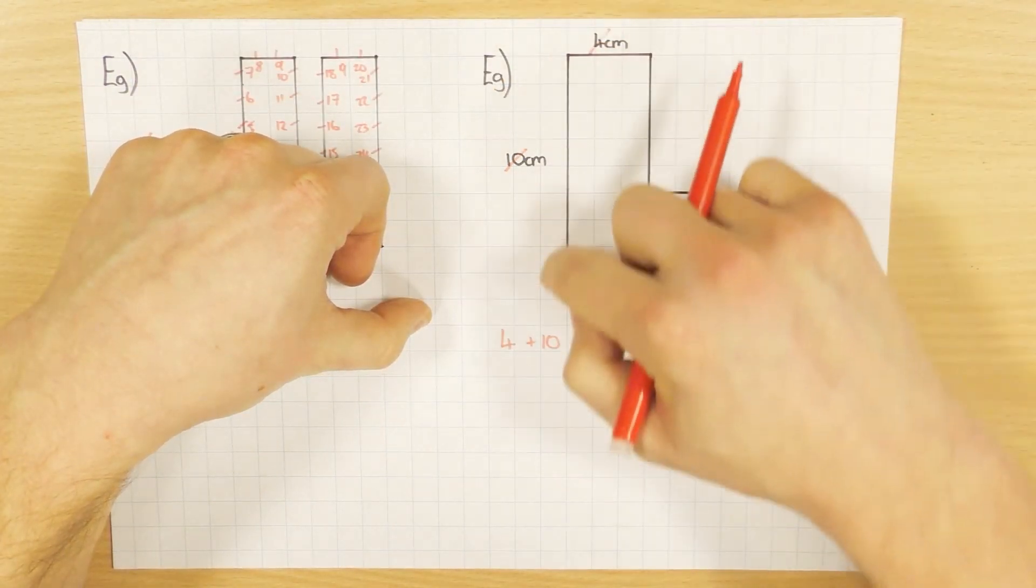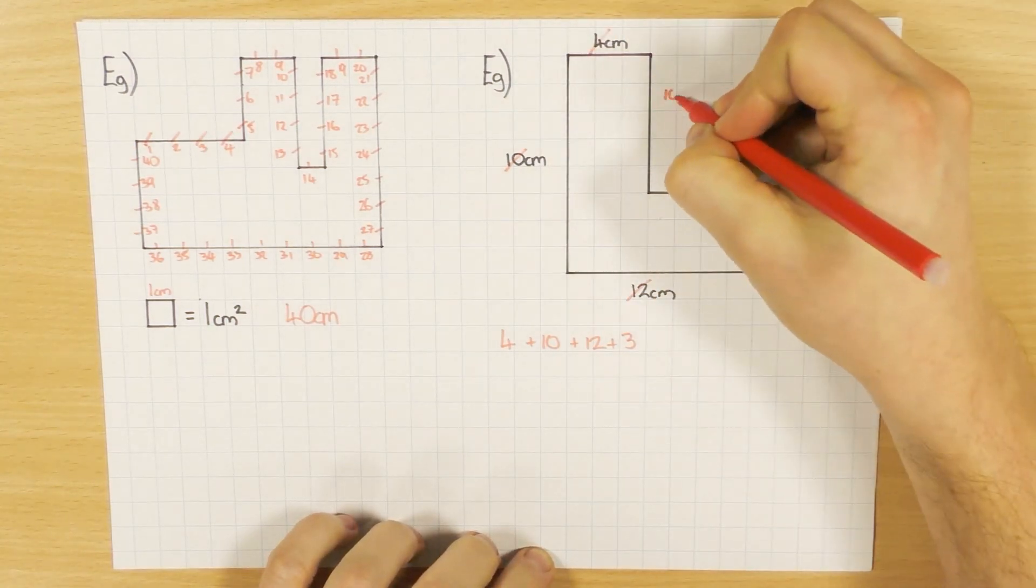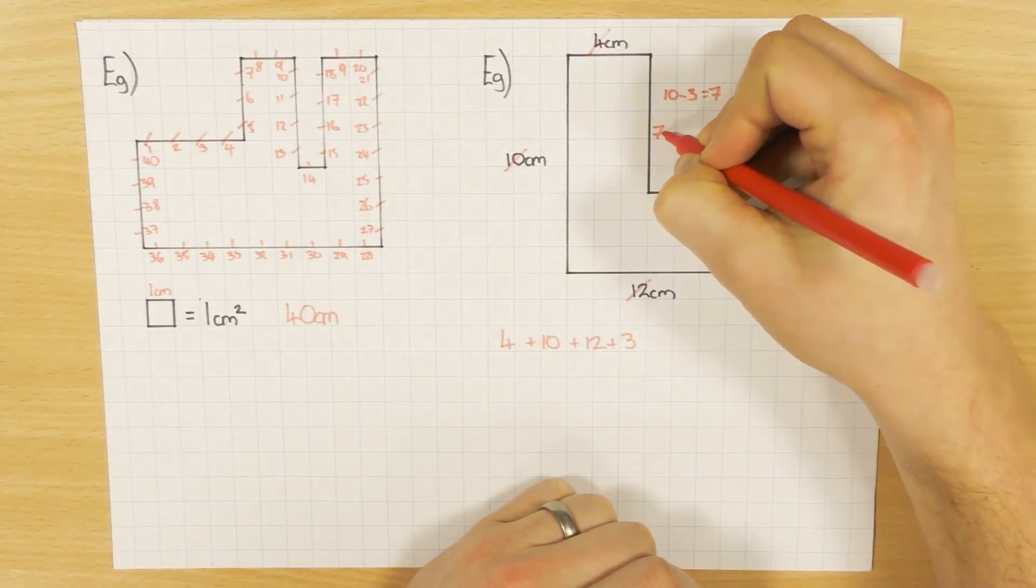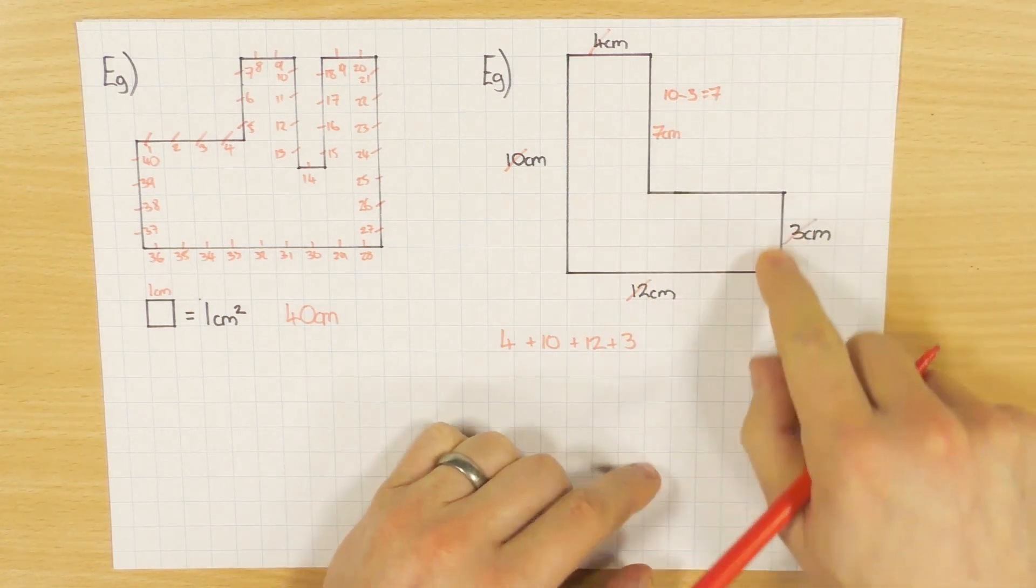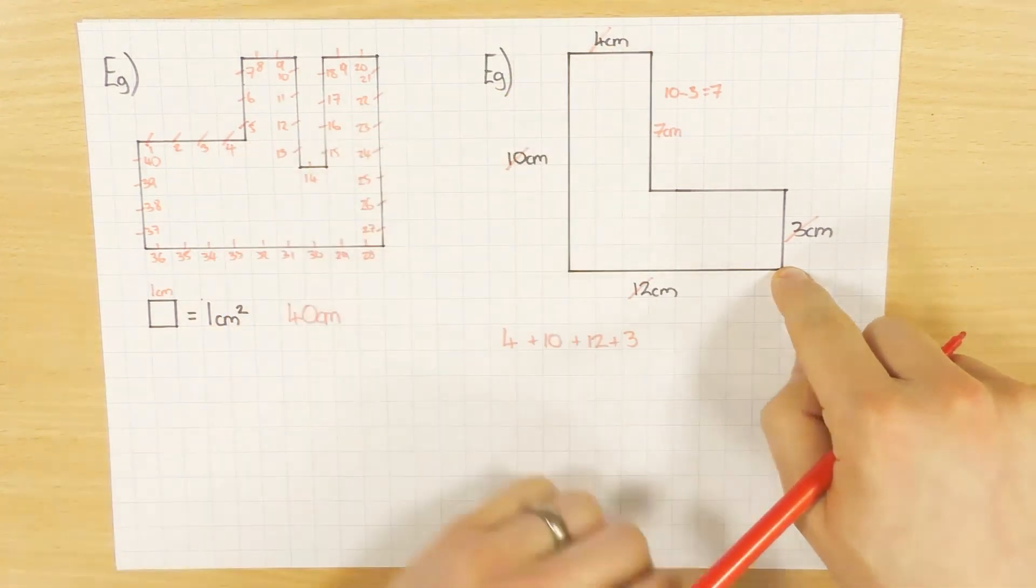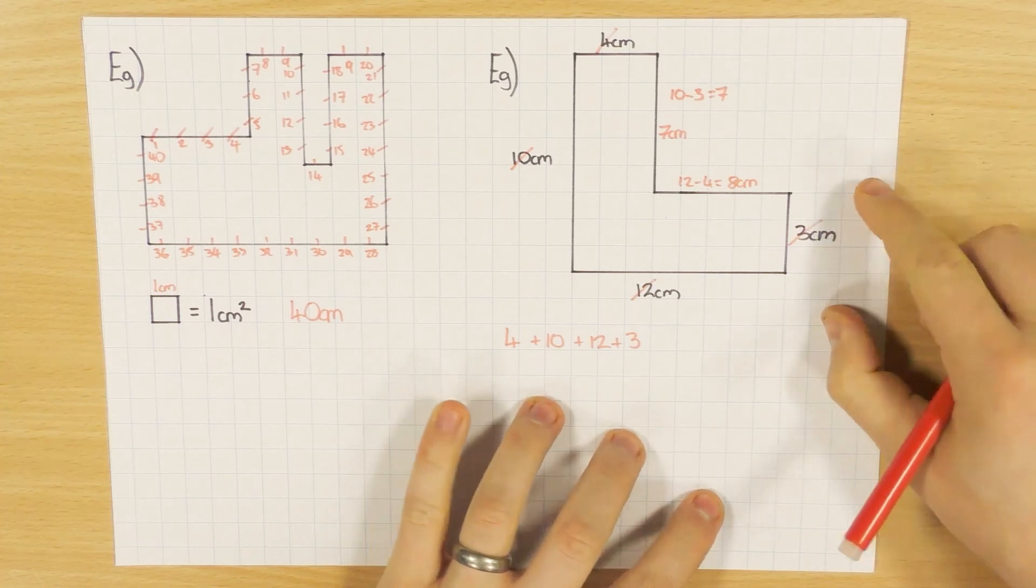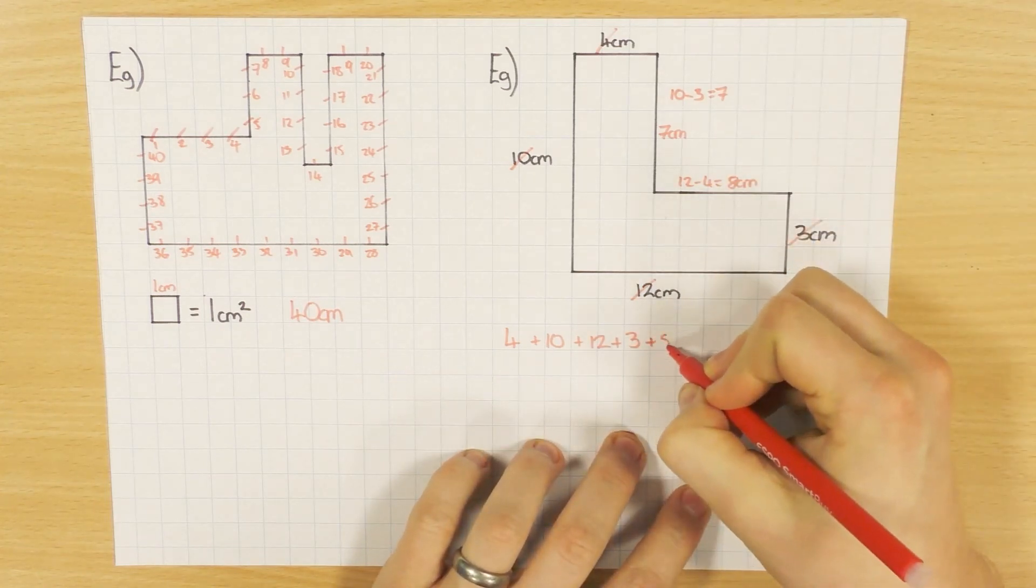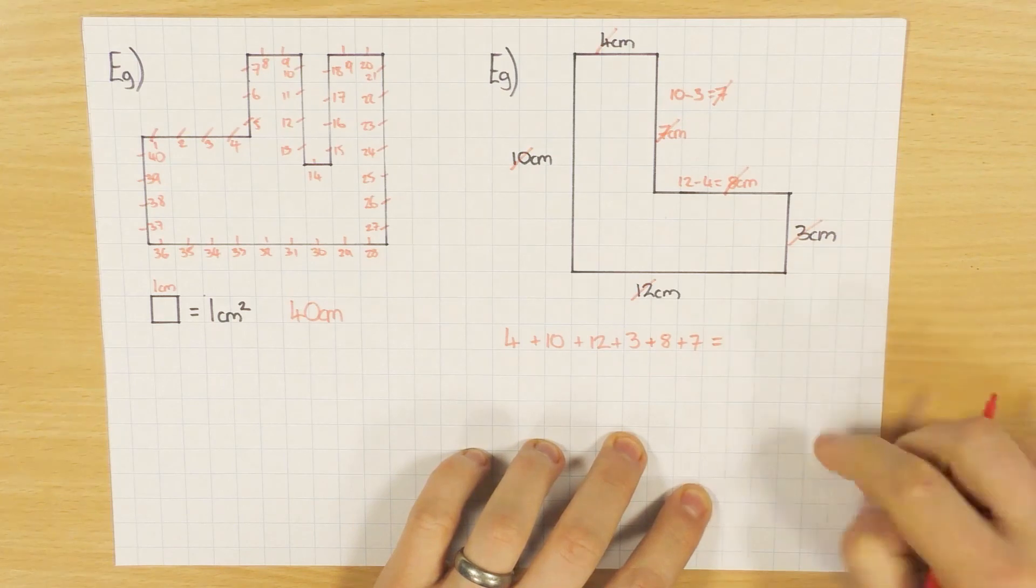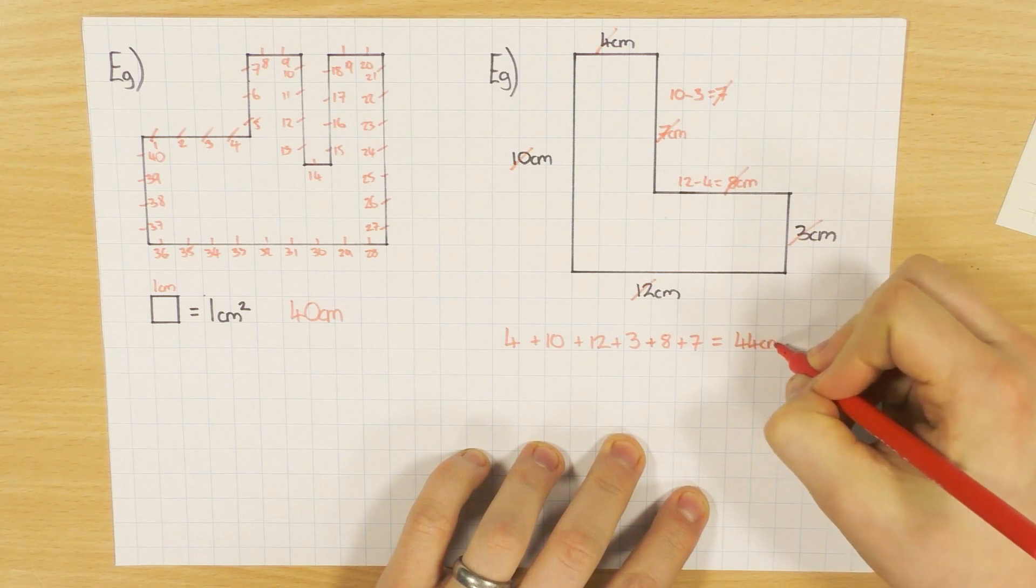Same thing for this side - the whole base is 12cm, this bit is 4cm, so 12 take away 4 is 8cm. You must work out the missing lengths, then continue around the shape. Don't forget to add that 7cm. Cross it off and add them up. If you add these all up, you get 44 cm.